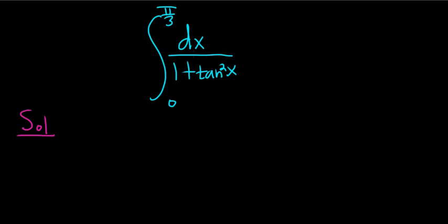Right away, an identity comes to mind. One plus the tangent squared of x, that's equal to secant squared of x. Super useful identity from trig. And so we can rewrite this as the integral from 0 to pi over 3 of 1 over secant squared x dx.